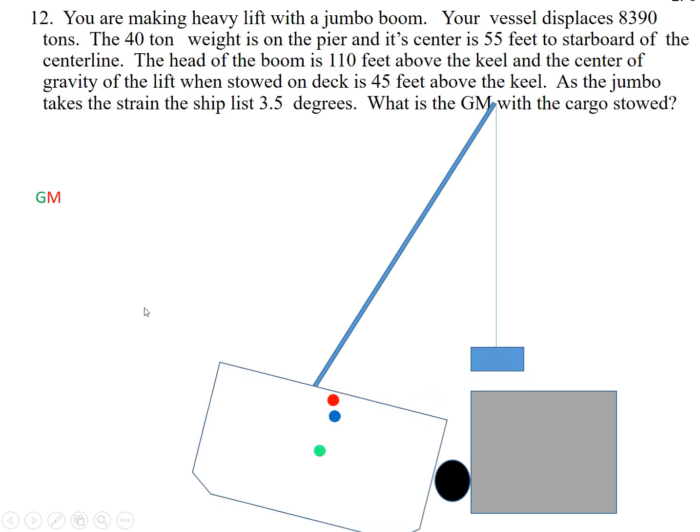So we have our original GM from the green dot to the red dot. And as soon as we lift, you can see that G, this was the original, this is where it is now. So G shifted from here to there. So this is our GM now.